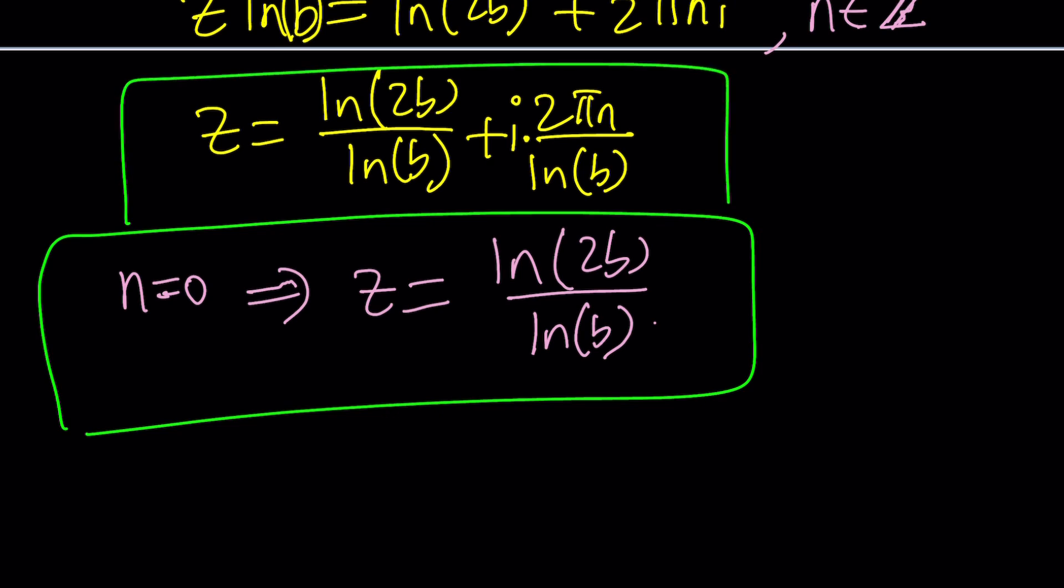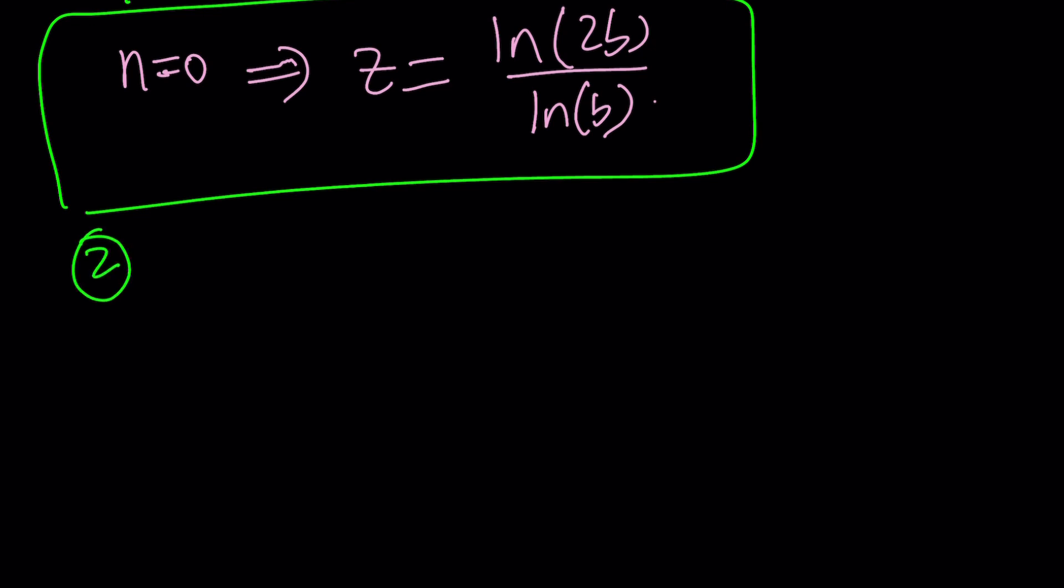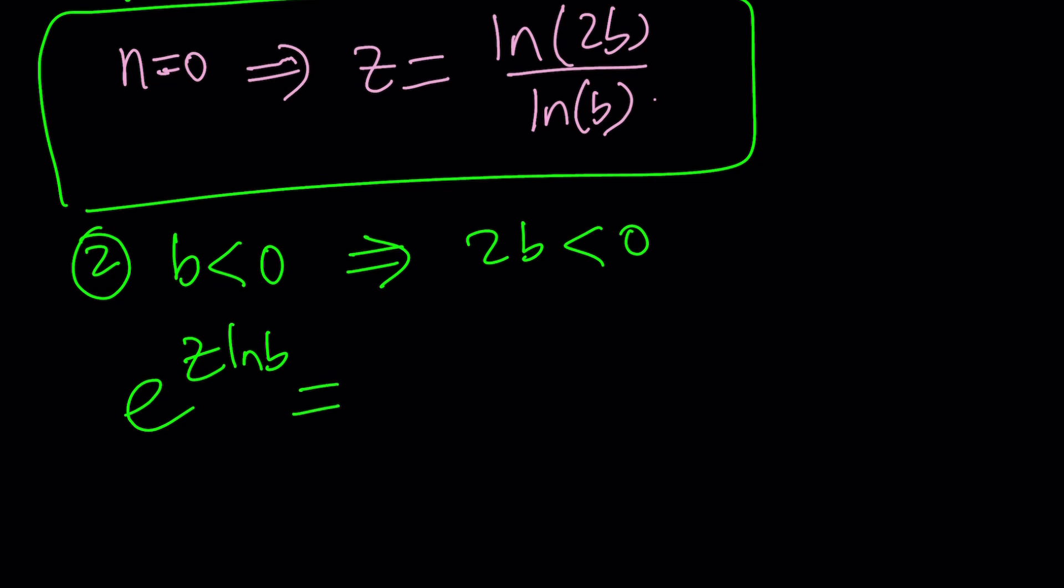B is less than 0, and that implies 2B is less than 0. When you write this as e to the power Z ln B equals 2B, how do you write 2B? Because it's negative, first you have to find its absolute value. Because 2B is negative, its absolute value is going to be its opposite, which is positive. And then the argument, because it's a negative real number, is going to be e to the power i(π + 2πK).